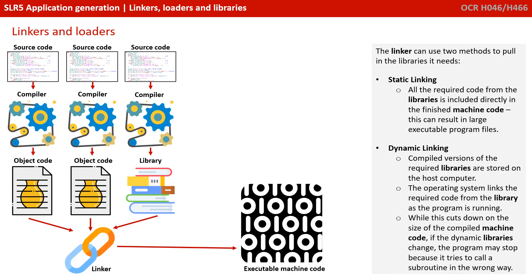The linker is able to use a couple of methods to pull in the various libraries it might need. There's static linking, where all the required code from the libraries is included directly in your finished machine code. Of course this can result in large executable program files. Or we could use dynamic linking, where compiled versions of the required libraries are stored on the host computer. The operating system links the required code from the libraries as your program is running. This cuts down on the size of the compiled machine code, but if these dynamic libraries change or don't exist on the host computer, the program may stop working because it tries to call a subroutine in the wrong way.